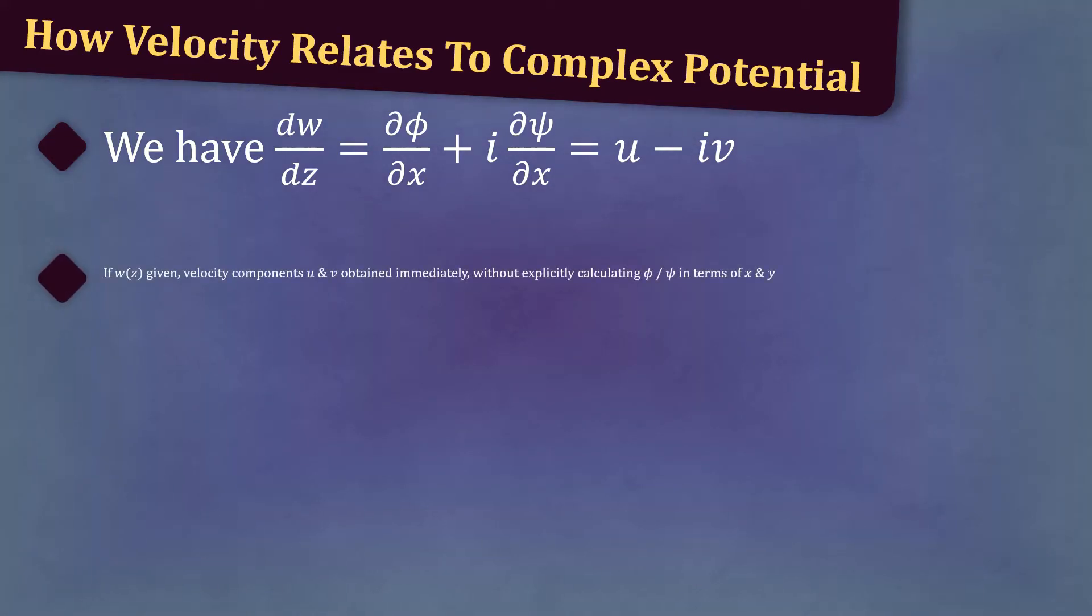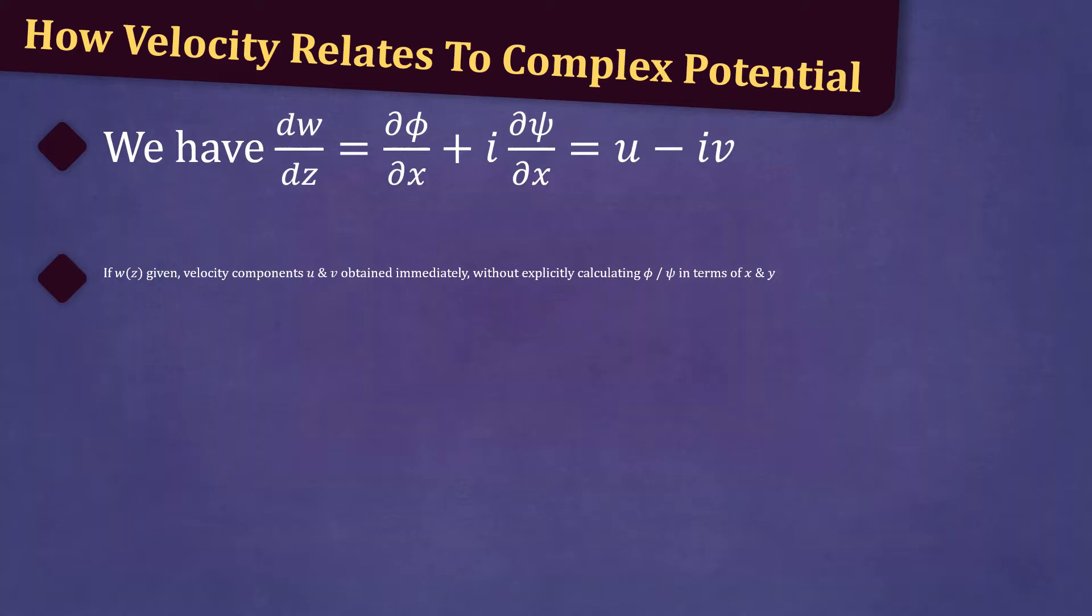Hence, if w is given, the velocity components u and v can be obtained immediately, without explicitly calculating φ or ψ in terms of x and y.